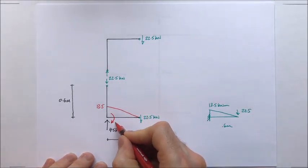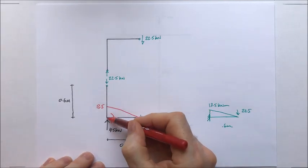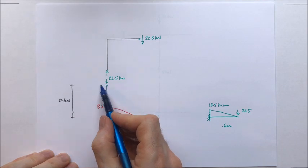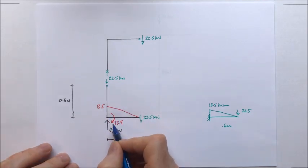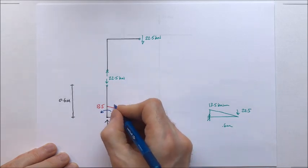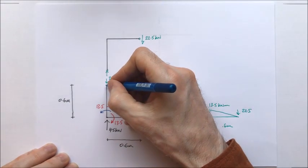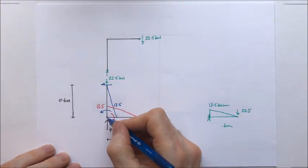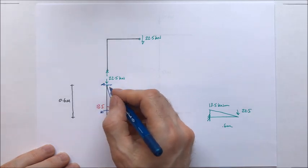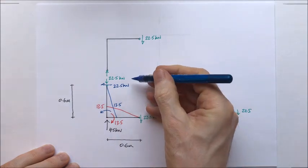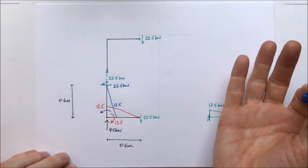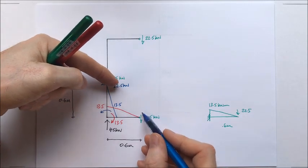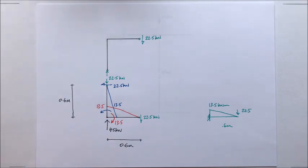So that's tending to bend that around to the tune of 13.5. Therefore, if I take moments around this point, there must be a horizontal force in this leg creating a similar but opposite bending moment to the tune of 13.5 kilonewton meters. The fact that all these shears and forces add up, that's because it's a square structure. If I take moments around this point, I've got two 22.5 kilonewton forces acting in opposite directions. So the joint is in equilibrium.